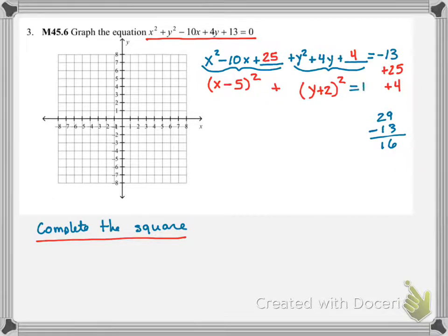So all of this equals 16, which is 4 squared. So now we know our center is going to be the x value that would produce 0 here. So we're going to have a 5.